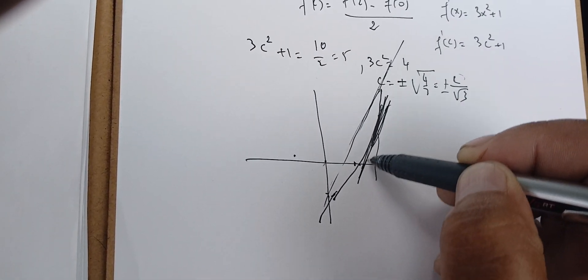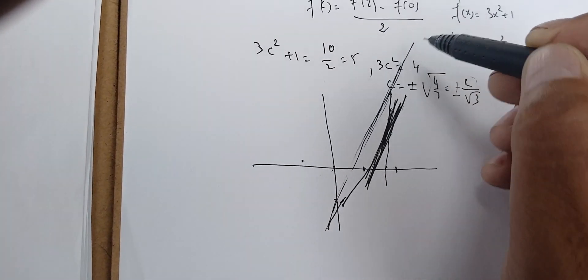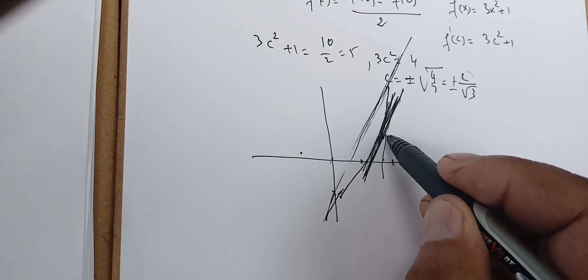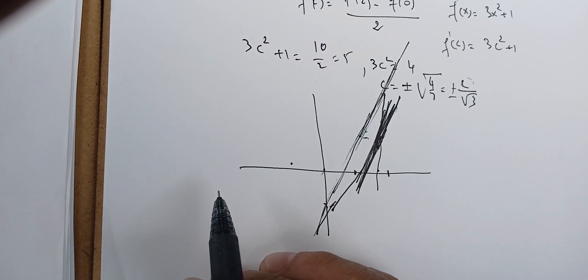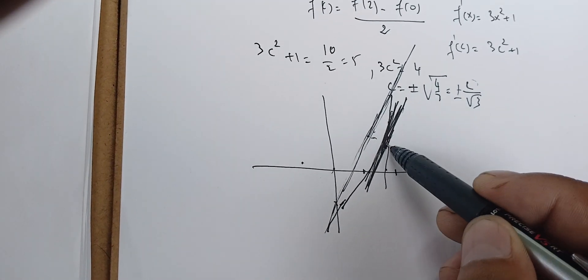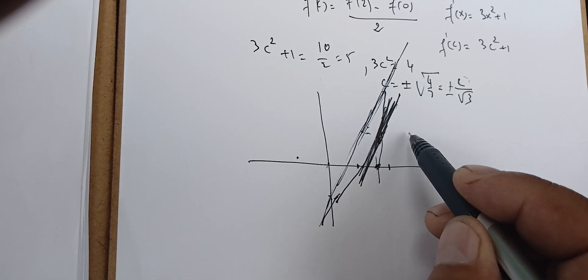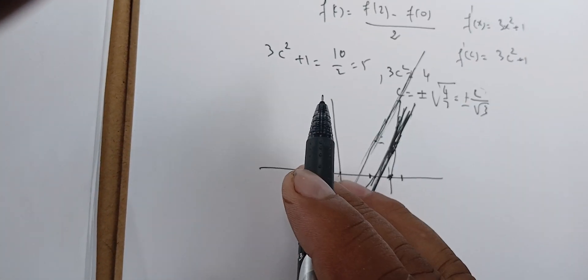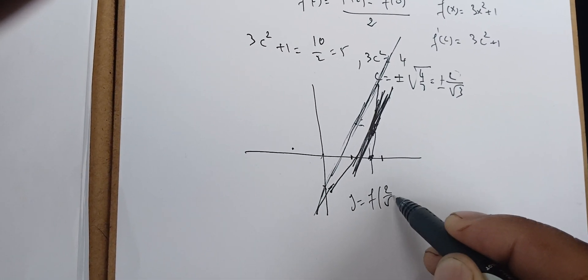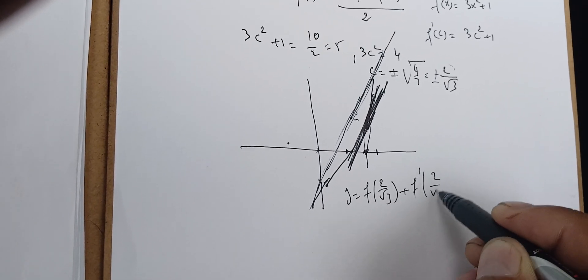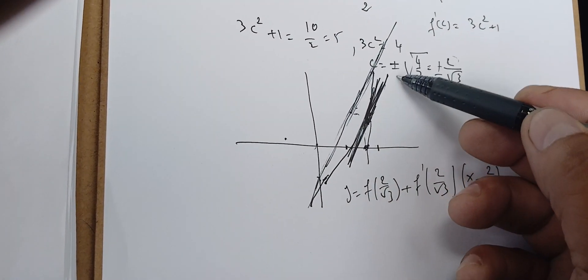If we graph it by calculator or using a nicely drawn technique, we'll see that the slope at this point c is the same as the secant slope. We can find the equation of the tangent line at c: y = f(2/√3) + f prime(2/√3) · (x − 2/√3). We can find the equation of this line.